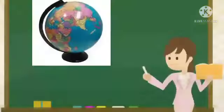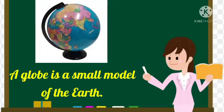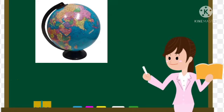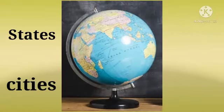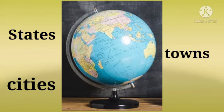Children, as we learnt in the previous chapter, a globe is a small model of the earth. It shows us the correct shape and location of the continents, oceans, and different countries on a smaller scale. Details like states, cities, and towns of a country cannot be shown on a globe.